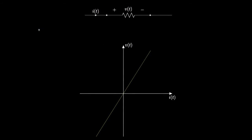A resistor is an electric circuit element with two terminals, and the symbol that we use for a resistor looks like this. A resistor is defined by the relationship between the voltage across and the current through the element, and when defining that relationship, we use a reference polarity as drawn in this diagram — we think of the current coming through the resistor on the same side as the positive polarity of the voltage.